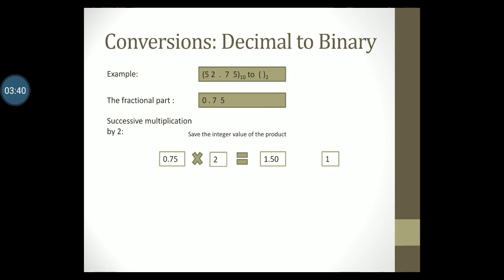Next we take the fractional part of the product, which is 0.50, and again multiply it by 2. We get the product as 1.00. So we record the integer part of this product, which is 1. The fractional part of the product is now 0.00. Since it is 0, we stop the successive multiplication by 2.